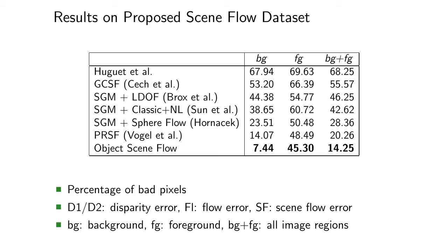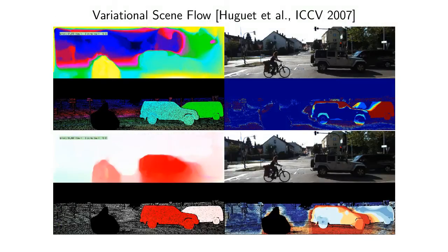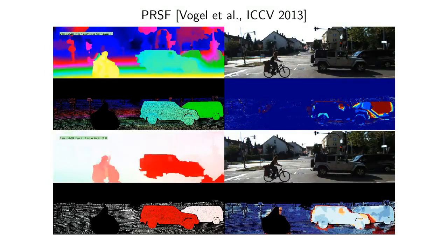For comparison, we first show results of a variational baseline. The top half of this figure shows the disparity estimates, disparity ground truth and disparity errors in red. The bottom half of this figure shows the optical flow results. Here, we show the results of Vogel et al. on the same image.